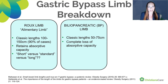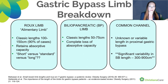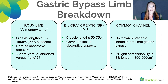Moving on, we have our biliopancreatic limb, or BP limb. This classically is somewhere between 50 and 75 centimeters. Because food is not passing through here, there is a complete loss of absorptive capacity. And finally, our common channel — in a proximal gastric bypass, this can be quite variable, and significantly variable from human to human. The average small bowel length in the average human can range anywhere from 300 to 900 centimeters, and in some extremes below 200 or over 1,000 centimeters. We don't measure total limb length when doing a gastric bypass, so the common channel can be incredibly variable and we really don't know how much we're leaving behind in a patient.